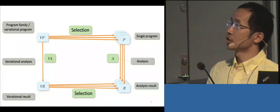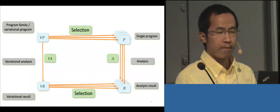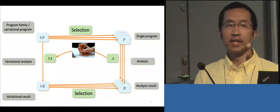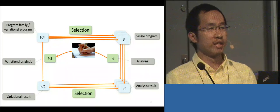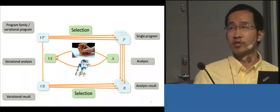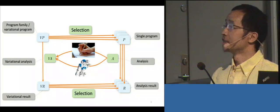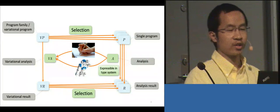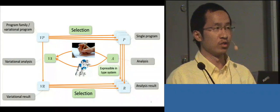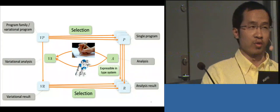The more interesting question is: where does the variational analysis come from? Traditionally, this is manually crafted by lifting the analysis for a single program. But in this work, we introduce a framework that lifts analyses expressed in type systems, and the output is the variational analysis for the variational program.